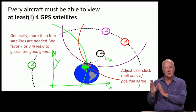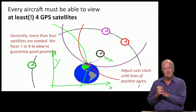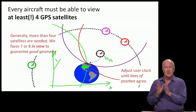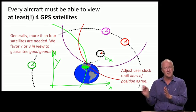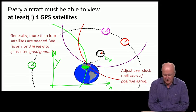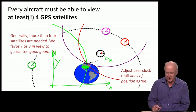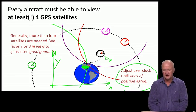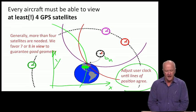There are a tremendous number of GPS applications that don't use x, y, z at all—they're only interested in that time estimate. The rest of the picture reminds us that we adjust the user clock until the lines of position agree. That, by the way, is not how it's mechanized; we'll come back to that.